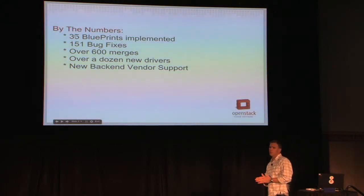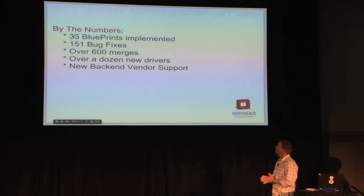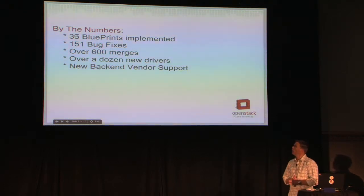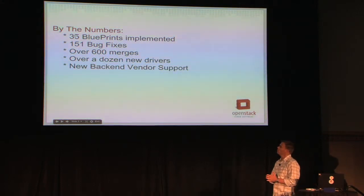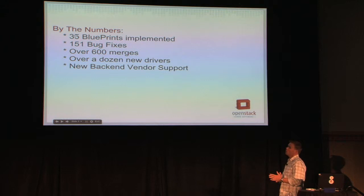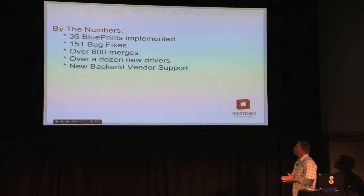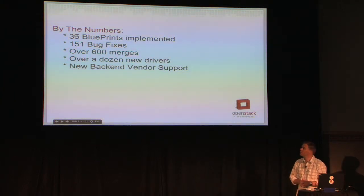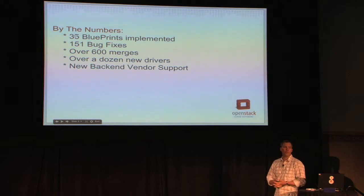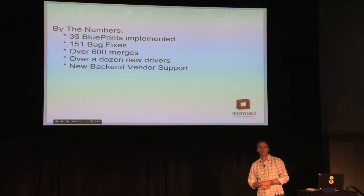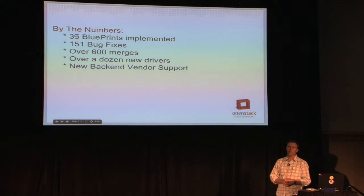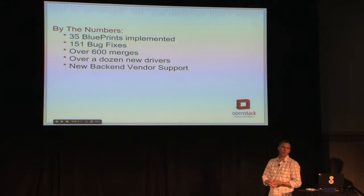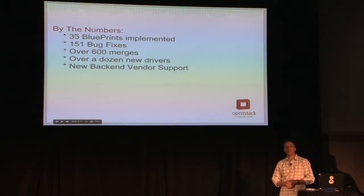Just a quick run through in terms of numbers. During the Grizzly cycle, we did 35 new blueprints, 151 actual bug fixes that were committed, over 600 merges into the code base. We added over a dozen new back-end drivers, which is pretty astonishing. We had a number of new vendors come into the OpenStack project and get involved. The project is really growing and things are starting to branch out and expand.